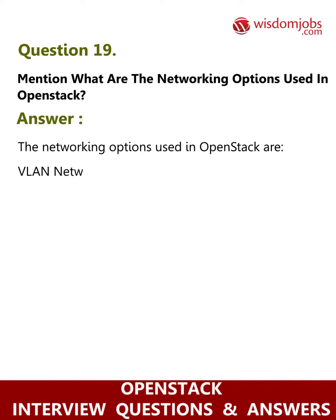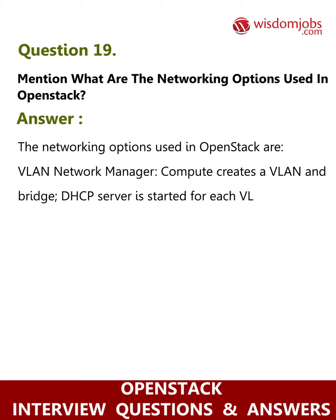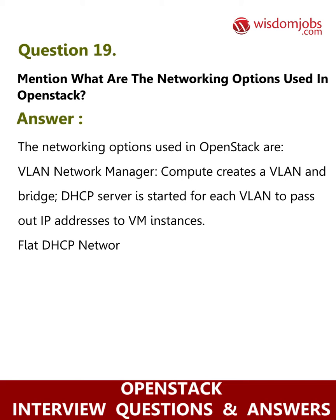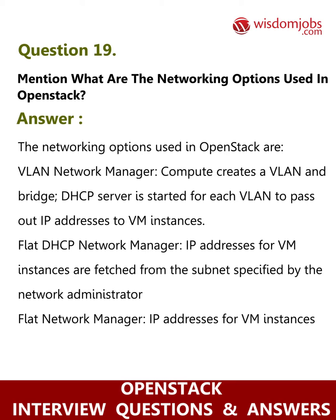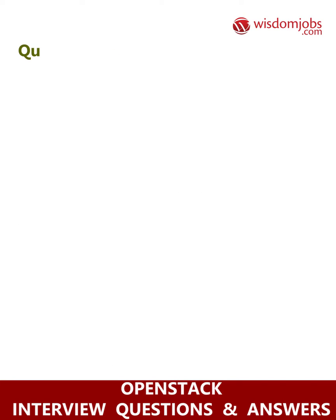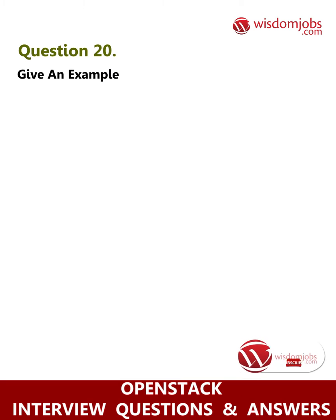Question 19: Mention what are the networking options used in OpenStack. Answer: The networking options used in OpenStack are: VLAN Network Manager — compute creates a VLAN and bridge, and a DHCP server is started for each VLAN to pass out IP addresses to VM instances; Flat DHCP Network Manager — IP addresses for VM instances are fetched from the subnet specified by the network administrator; Flat Network Manager — IP addresses for VM instances are fetched from the subnet and then injected into the image on launch.